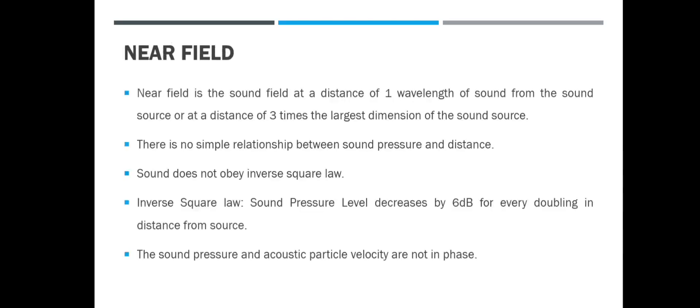The first is near field. As the name suggests, near meaning closer to the source. Near field is a sound field at a distance of one wavelength of sound from the sound source, or at a distance of three times the largest dimension of the sound source, whichever is greater. In the near field, sound behaves a little differently — there is no simple relationship between the sound pressure level and the distance, meaning sound does not obey the inverse square law.